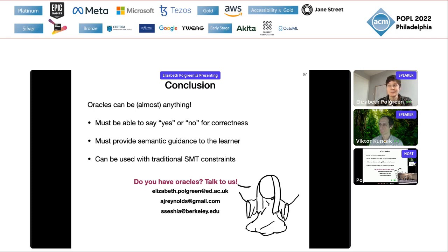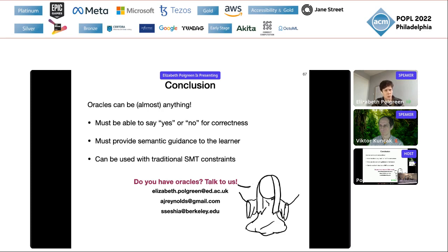Question: Do you expect an extension of this algorithm to non-monotonic oracles — like a testing-based implementation where with more knowledge comes better ability to describe the function's behavior, so you might need to drop earlier-learned constraints? Answer: That's one of the really fun directions for future work. If oracles could give some kind of confidence weighting to what they're telling you, the solver could balance that out and drop things it's less confident about. We haven't done it yet though.